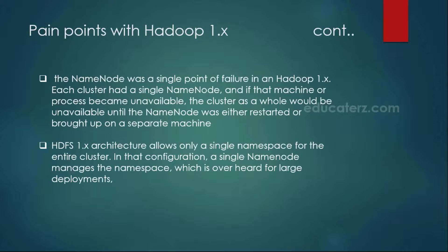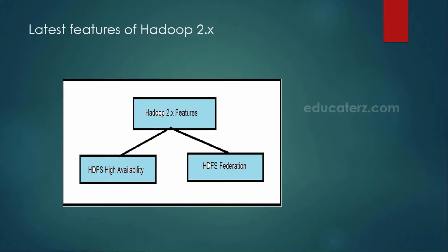As we talked about, the single point of failure of the name node is one cause, one pain point, and another one is the single name space for the entire cluster. So if you have large deployments with a huge amount of slave machines, it will be very troublesome and we will have performance issues because your single name node has to take care of your entire cluster. To overcome all these pain points in the 1.x architecture, we have these latest features in Hadoop 2.x — HDFS high availability and HDFS federation. Let's see what exactly HDFS high availability and HDFS federation are and how they work.